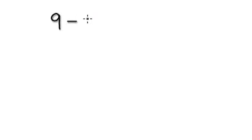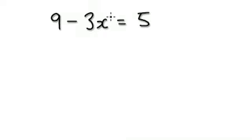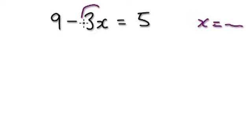Let's have a quick recap. If you're given something like 9 minus 3x equals 5, your eye should zoom into the x because you want to get x standing on its own — x equals something. But x is stuck in this bubble here, and you can see it's a minus bubble.